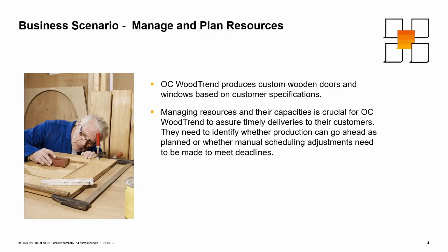In this example, we look at the company OC Woodtrend, which produces custom wooden doors and windows based on customer specifications. They use a make-to-order production process in which deadlines are derived from the delivery date of their customers' orders. Managing resources and their capacities is crucial for OC Woodtrend to assure timely deliveries, identifying whether production can go ahead as planned or whether manual scheduling adjustments need to be made to meet deadlines.